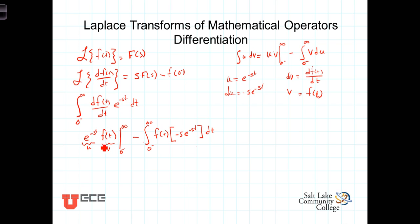Looking at this first term and evaluating it at the limits: at the upper limit, we have e to the minus st. With t going to infinity, e to the minus infinity is 0. And as long as f of t is constrained — meaning it doesn't diverge or go towards infinity itself as t goes to infinity — we'll have 0 times some non-infinite number. So this term evaluated at infinity is going to be 0.